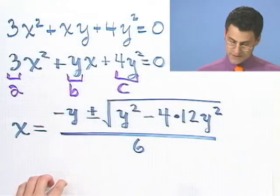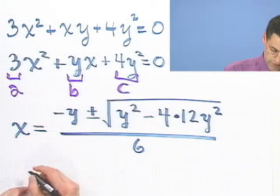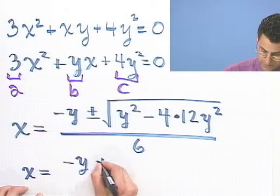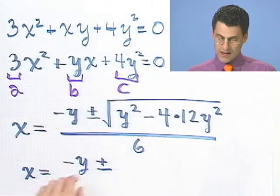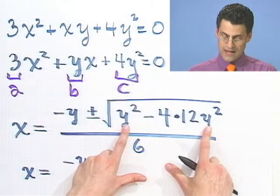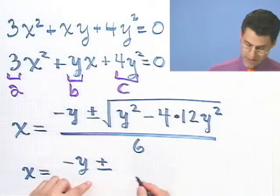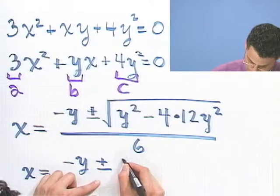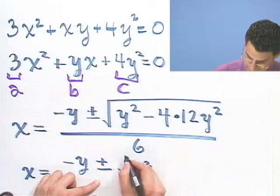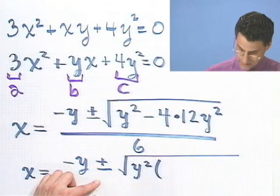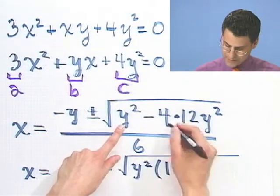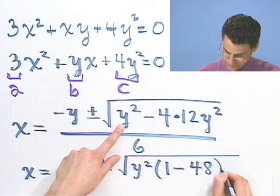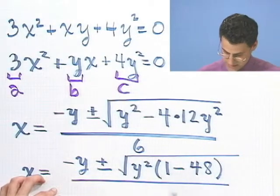Now we can simplify this a little bit. x would equal minus y, plus or minus. Notice I can factor out a y² here — and the y² can be pulled all the way out of the square root. So inside the radical I have y² times (1 minus 48).